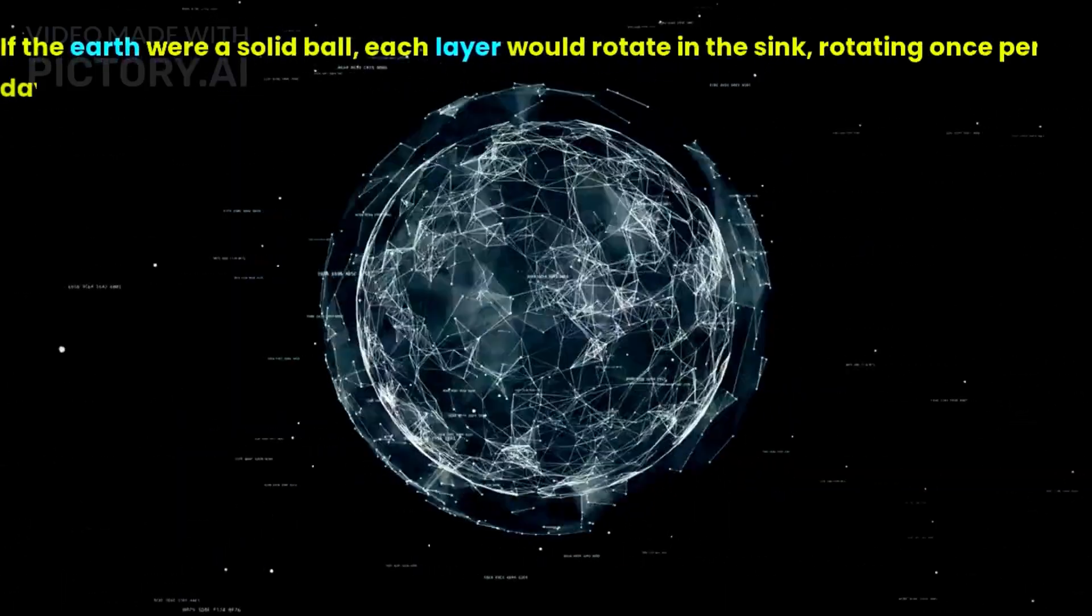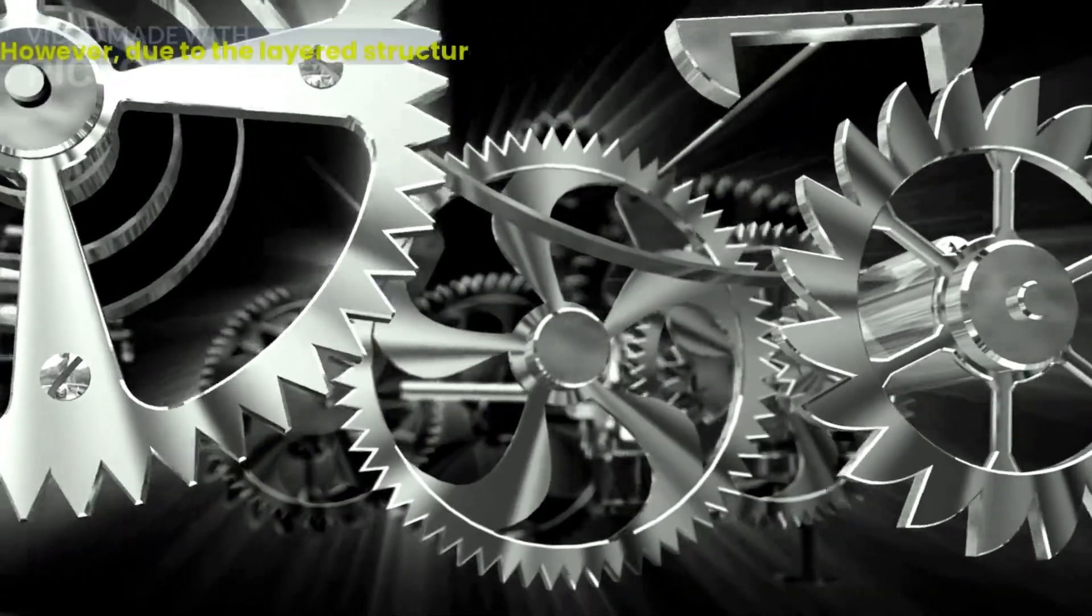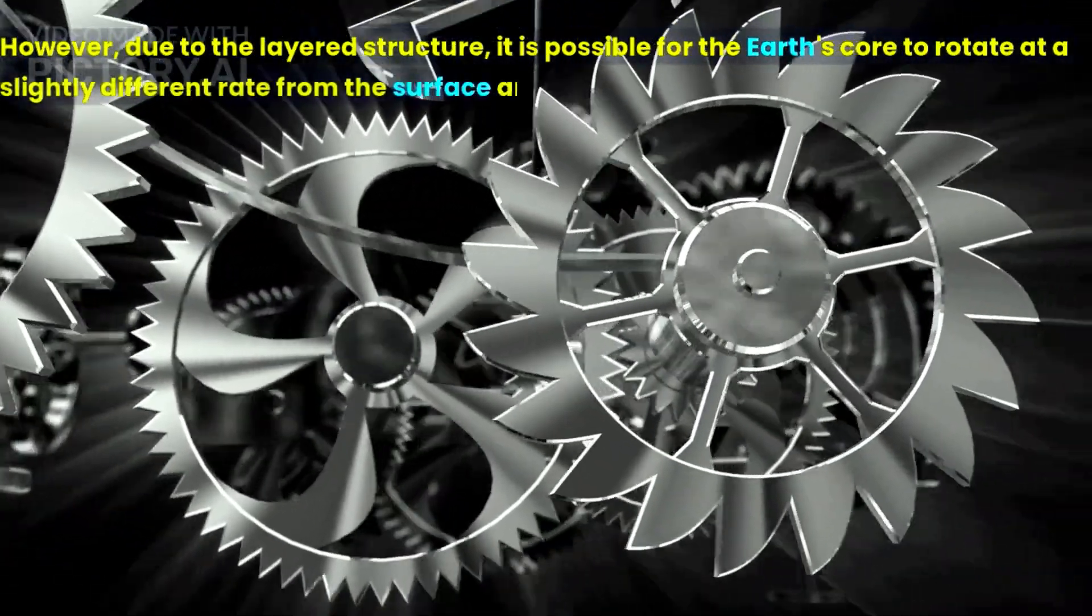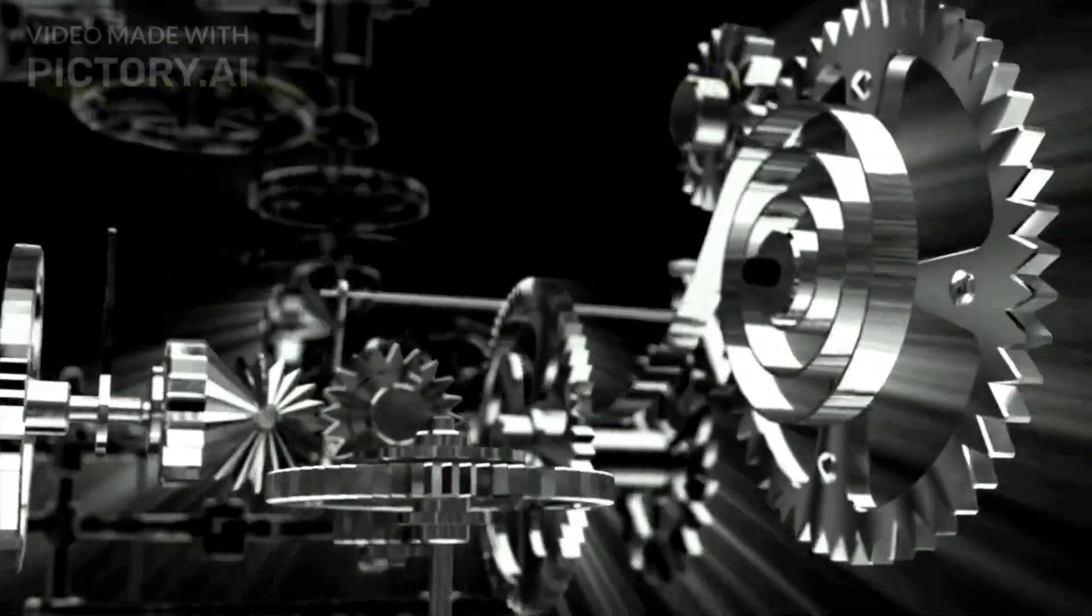If the Earth were a solid ball, each layer would rotate in the sink, rotating once per day. However, due to the layered structure, it is possible for the Earth's core to rotate at a slightly different rate from the surface and other layers.